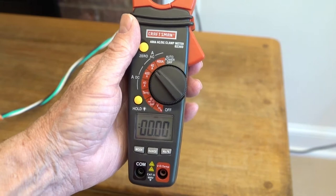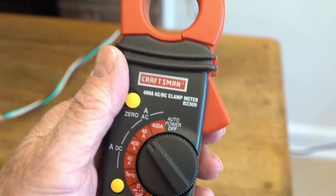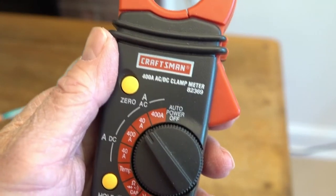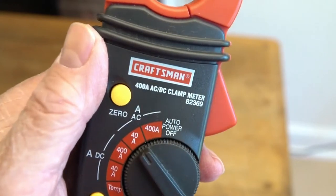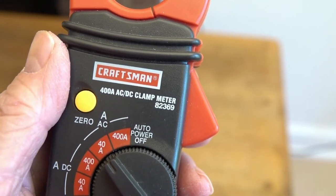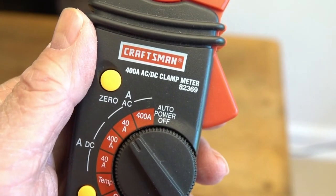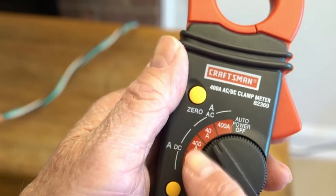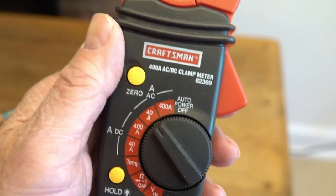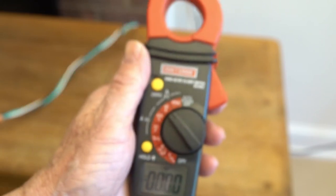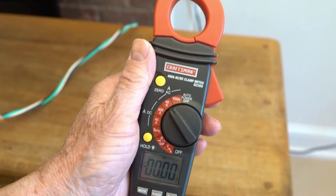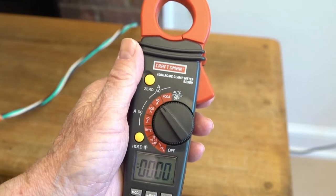In this video, we're going to use this Craftsman clamp meter. It's a 82-369. It measures both AC and DC. Right now we've got it set for AC 40 amp scale. We're also going to use it to measure DC on a solar power experiment we're doing.